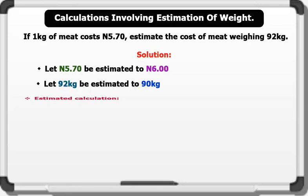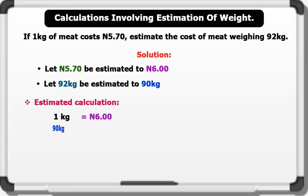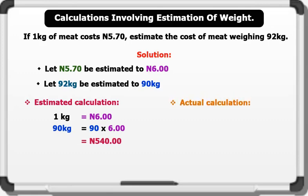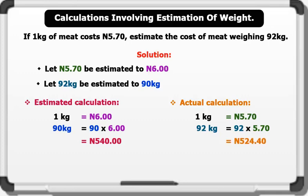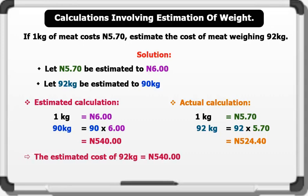Let's see the estimated calculation. If 1 kilogram equals 6 Naira, then 90 kilograms equals 90 times 6. This gives us an estimated value of 540 Naira. Let's see the actual calculation. 1 kilogram equals 5 Naira 70 Kobo. 92 kilograms equals 92 times 5 Naira 70 Kobo. This gives us an actual value of 524 Naira 40 Kobo. The estimated cost of 92 kilograms equals 540 Naira. That's a very good guess.